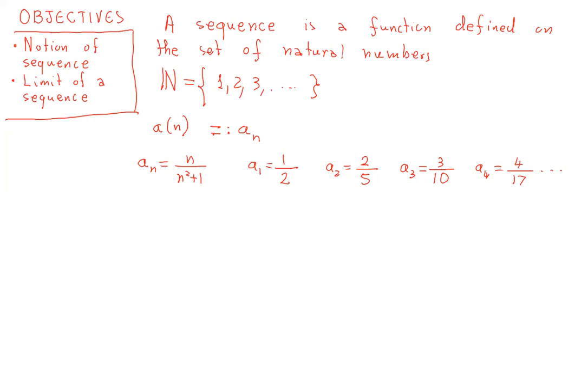So the nice thing is that we can write the inputs and outputs of the sequence one after the other. I could have equally written just the terms: 1 half, 2 fifths, 3 over 10, 4 over 17, and so on.